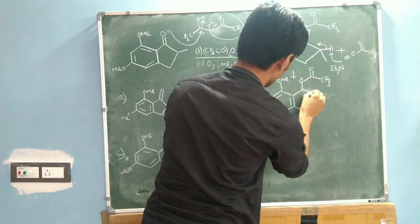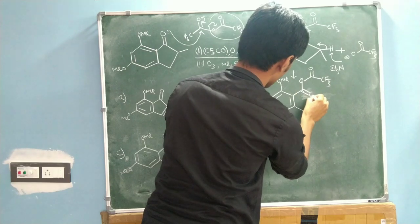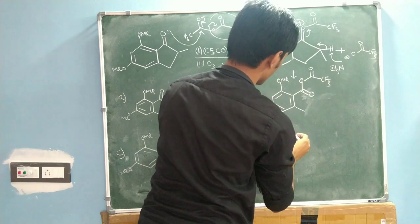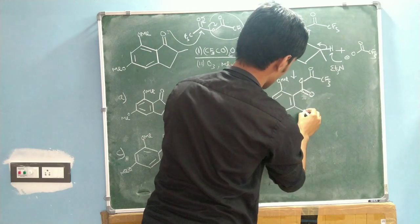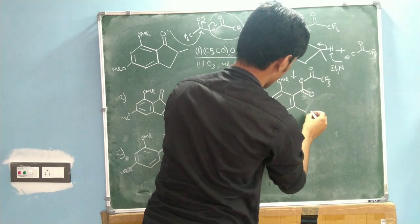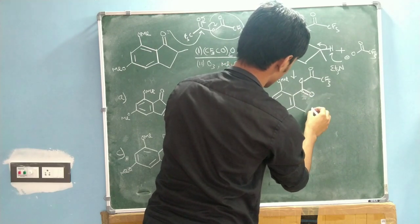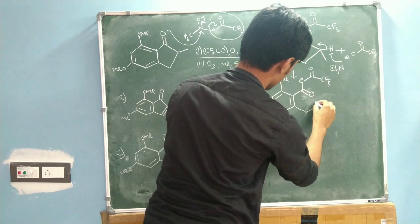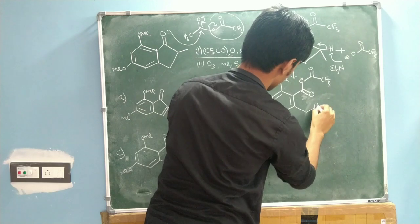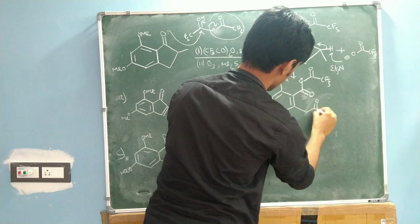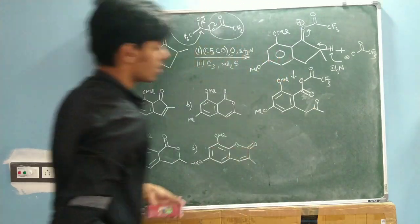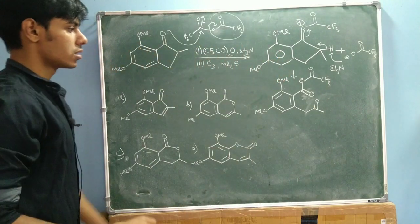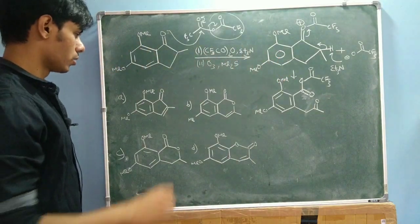When you do ozonolysis on this double bond, you are going to get one carbonyl group on one side and another carbonyl group on the other side — so this is what you get from the ozonolysis step.